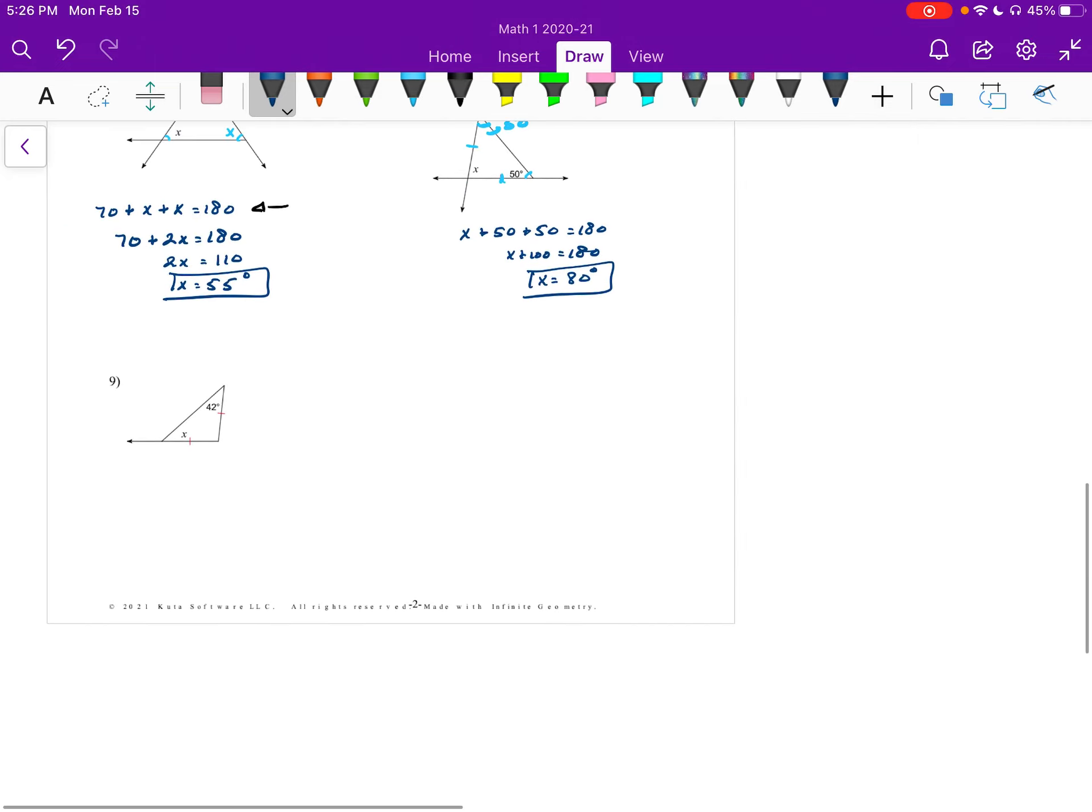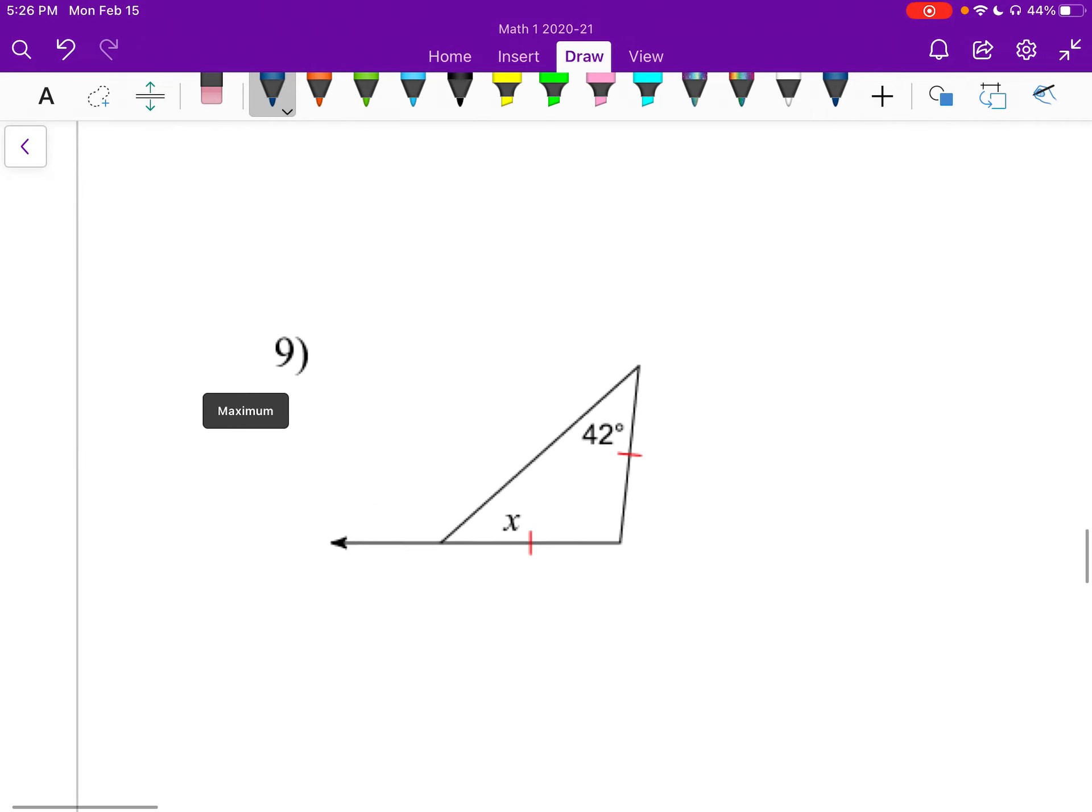Alright, is this my last one? Yep, last one, number nine. Now this is a nice, easy one to finish off with. An isosceles triangle because we have two congruent sides. That makes this angle and this angle equal. And x is 42 degrees. Alright, that is all.